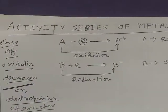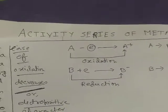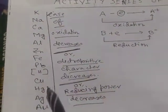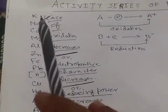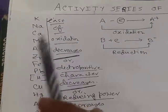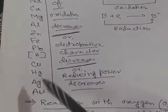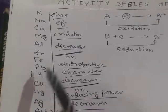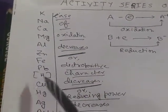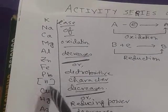Hello students, today our topic is the activity series of metals. In this series, different metals are placed. Potassium, sodium, and calcium are placed at the top of the series, whereas copper, mercury, silver, and aurum are placed at the bottom. All the metals are placed in the series, and though hydrogen is a non-metal, it is also placed in this series.